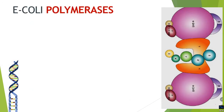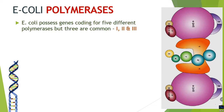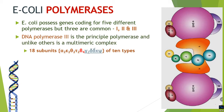Taking E. coli as an example, there are genes coding for five different types of polymerases, three of which are important: DNA Polymerase I, II, and III. DNA Polymerase III is the principal polymerase and, unlike the others, is a multimeric complex of 18 subunits of 10 different types.